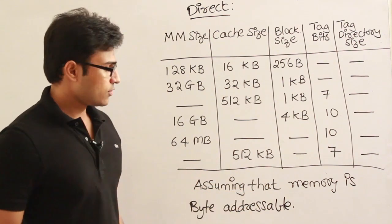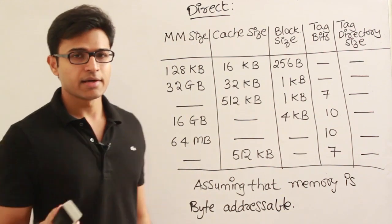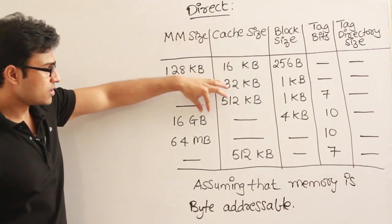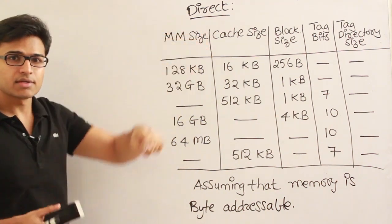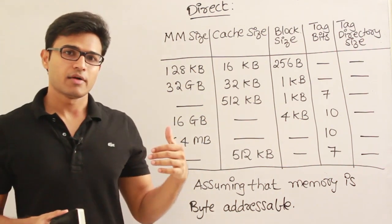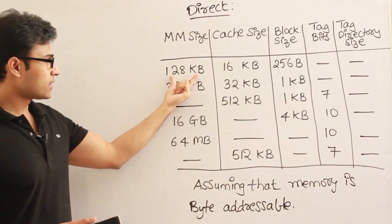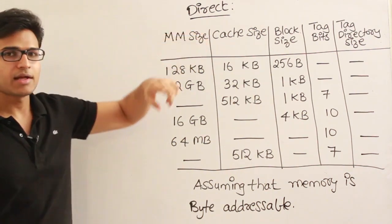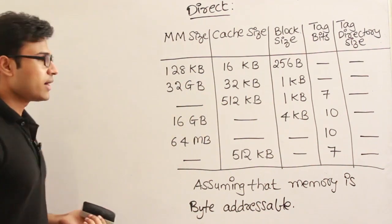The assumption is that memory is byte addressable. The reason for specifying byte addressable is that when the main memory size is given as KB or GB, and you try to represent the physical address — which is nothing but the number of addressable units in the main memory — you convert the size. For example, with 128K, you find out the number of bits required to address 128K.